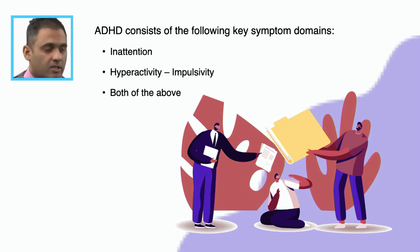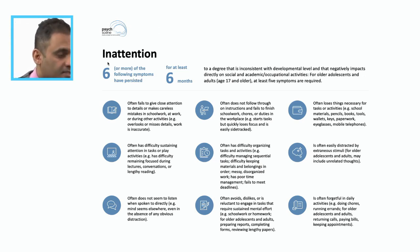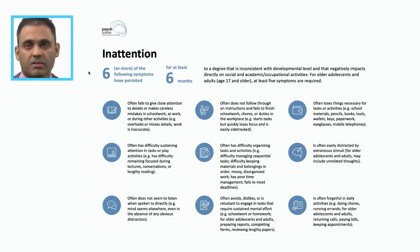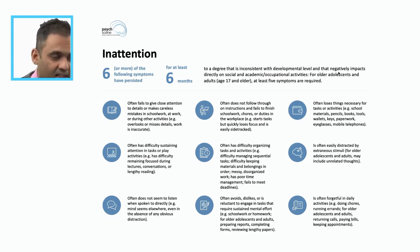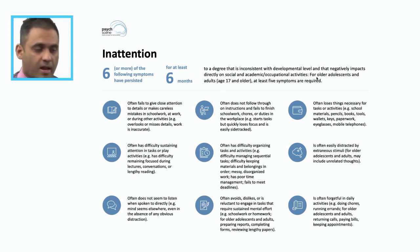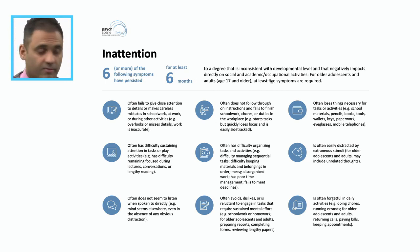So what are the domains? The key domains are inattention, hyperactivity, and impulsivity, or both. For inattention, the criteria require six or more of the following symptoms to have persisted for at least six months to a degree that is inconsistent with developmental level, and that negatively impacts directly on social, academic, or occupational activities. For older adolescents and adults, at least five symptoms are required.